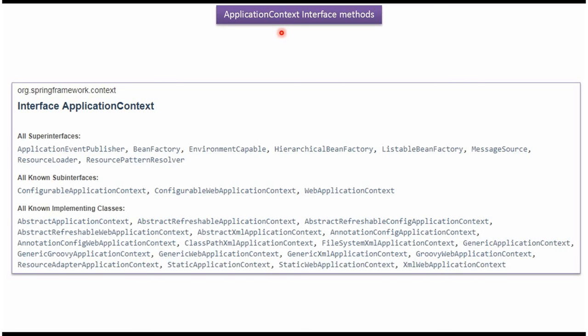In this video tutorial I will cover methods supported by the ApplicationContext interface. Here you can see the ApplicationContext interface and its super interfaces. ApplicationContext interface extends BeanFactory interface, so whatever methods are supported by BeanFactory interface will also be supported by ApplicationContext interface. Here you can also see the sub interfaces and the list of classes which implement the ApplicationContext interface.